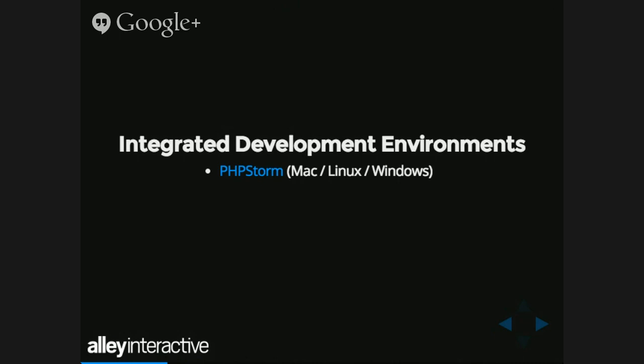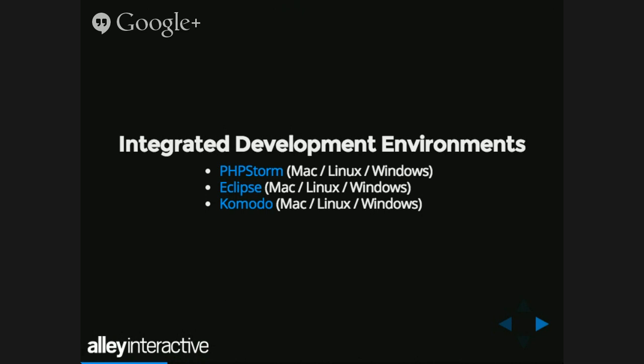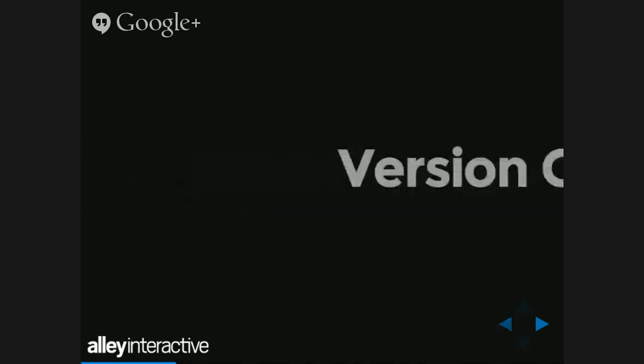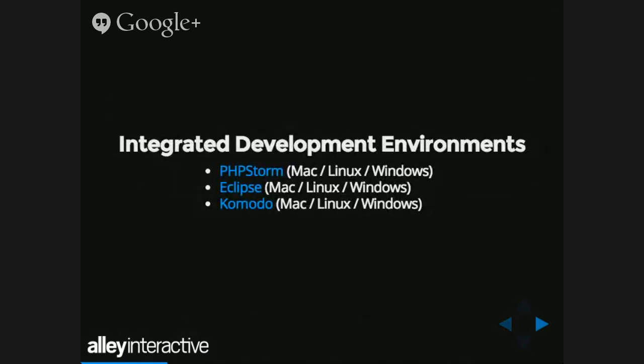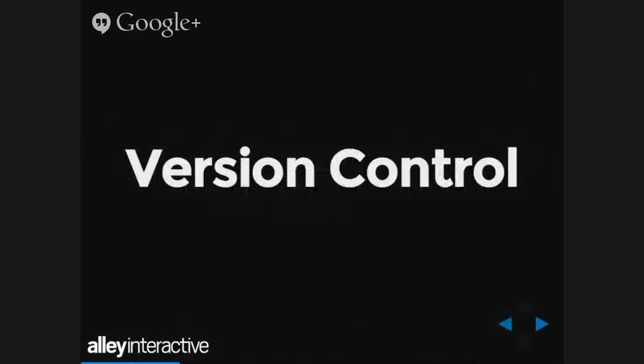Since they were nice enough to sponsor the event, JetBrains gets the first mention. PHPStorm — a lot of people super love this and it's available on everything. Eclipse is an open source option that's available on everything. Then there's Komodo. A lot of these, other than Eclipse, are primarily pay situations — PHPStorm and Komodo are each a couple hundred bucks. But if it's the thing you're doing every day, it's worth at least checking out the free trial. Eclipse is free and open source and is actually used in a lot of different ways. The original Android development environment was built around Eclipse at the core with custom stuff bolted on for Android. Moto has a free version too.